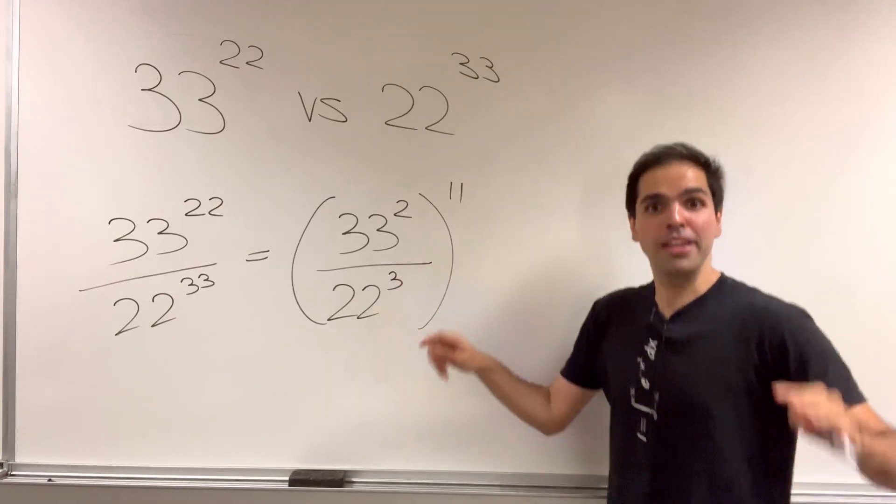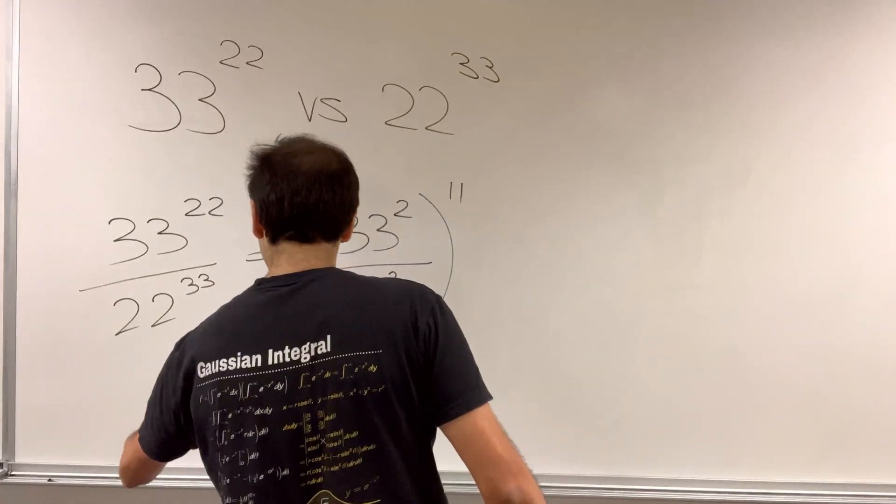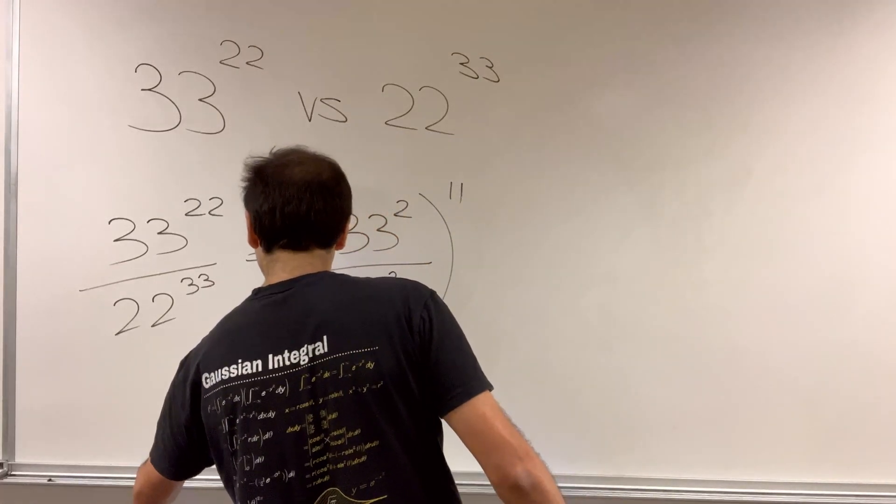So all we need to figure out is: is the base bigger than 1 or smaller than 1? Now, 33 squared over 22 cubed,